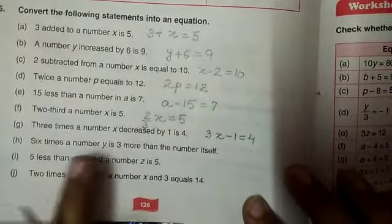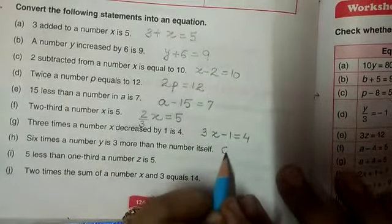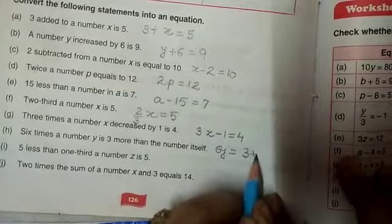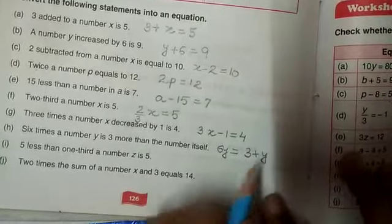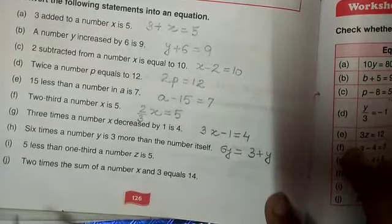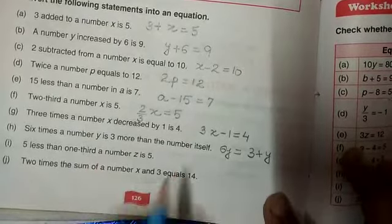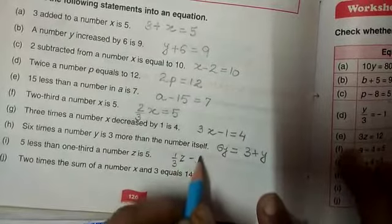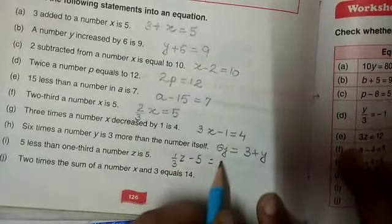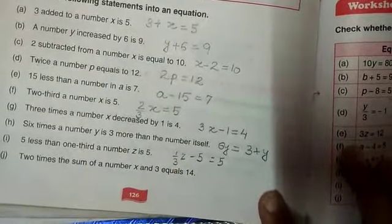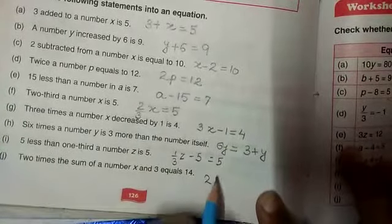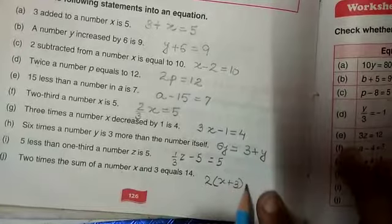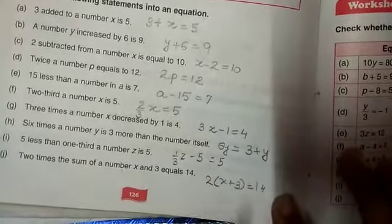Now, 6 times a number y. 6y equals 3 more than number itself y. 5 less than 1 third a number z, 1 third of number z, now subtract 5, it should be equal to 5. 2 times sum of number x and 3 equals 14.